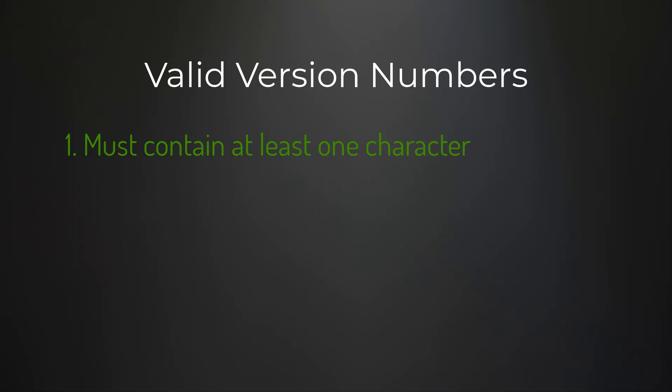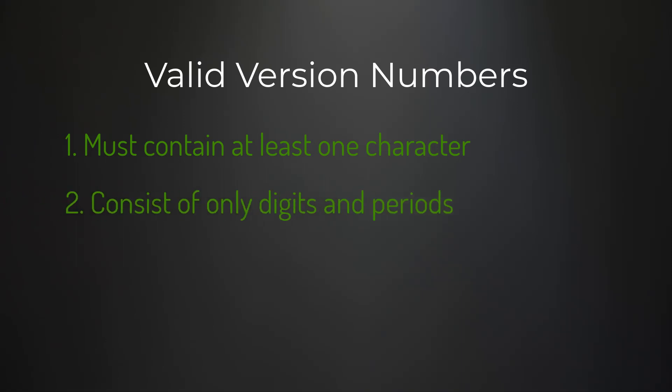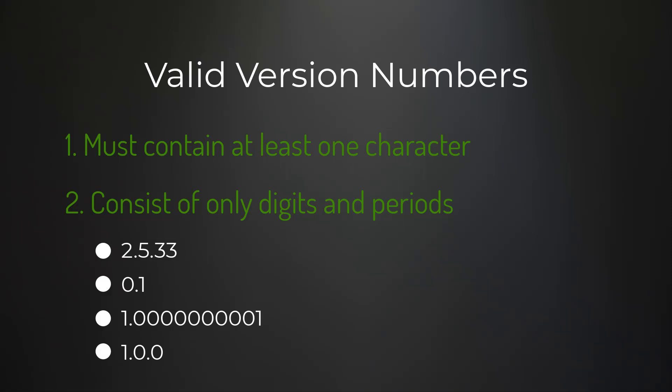First, let's define what valid version numbers are. Valid version numbers must contain at least one character and consist of only digits and periods. Here are some examples of valid version numbers — notice all examples contain characters that are either digits or periods. Each section between the periods is called a revision, and there can be zero or more revisions.